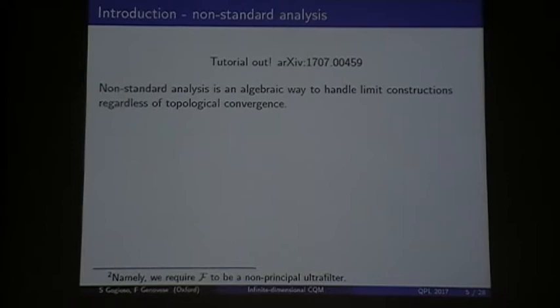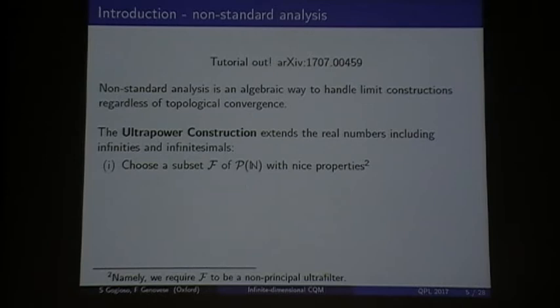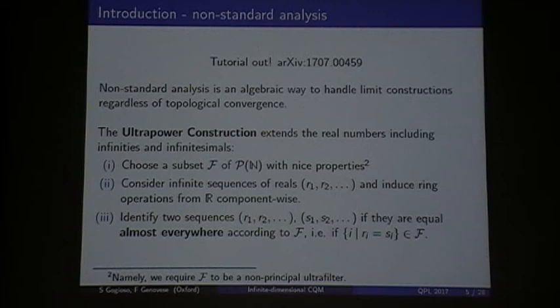So what happens is this. You start with the real numbers, or whatever, usually real numbers, and you want to extend the real numbers, putting in infinites and infinitesimals, so that you can do limit constructions algebraically and not topologically. You do this with an ultra-power construction that more or less works like this. You choose a subset of the set of subsets of the natural numbers with properties, namely you want a non-principal ultra-filter. You consider infinite sequences of real numbers. You induce ring operations on these sequences component-wise, and then you quotient saying that two sequences are the same thing when basically they differ only on a number of i's that are in the ultra-filter. So when they are almost everywhere equal, this means that they are equal on a number of i's that is in the ultra-filter.